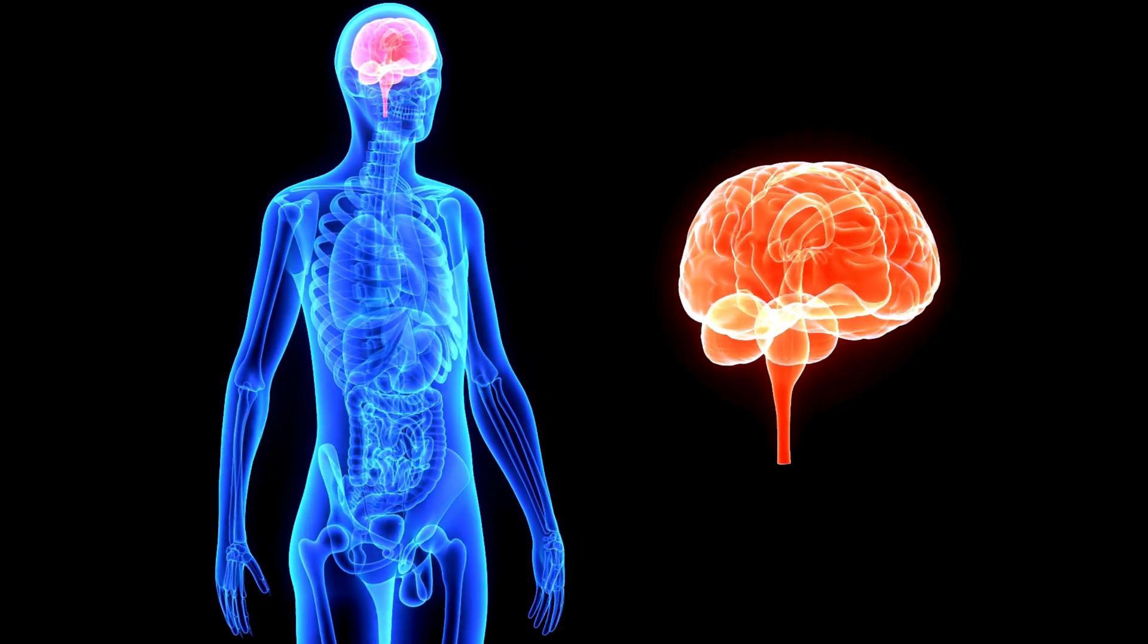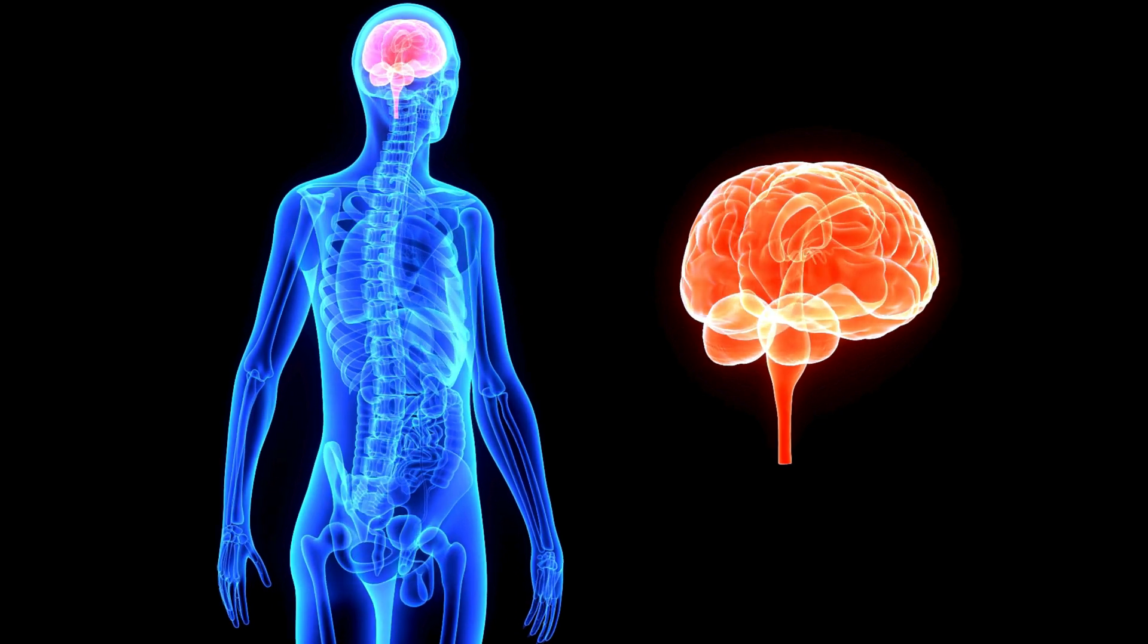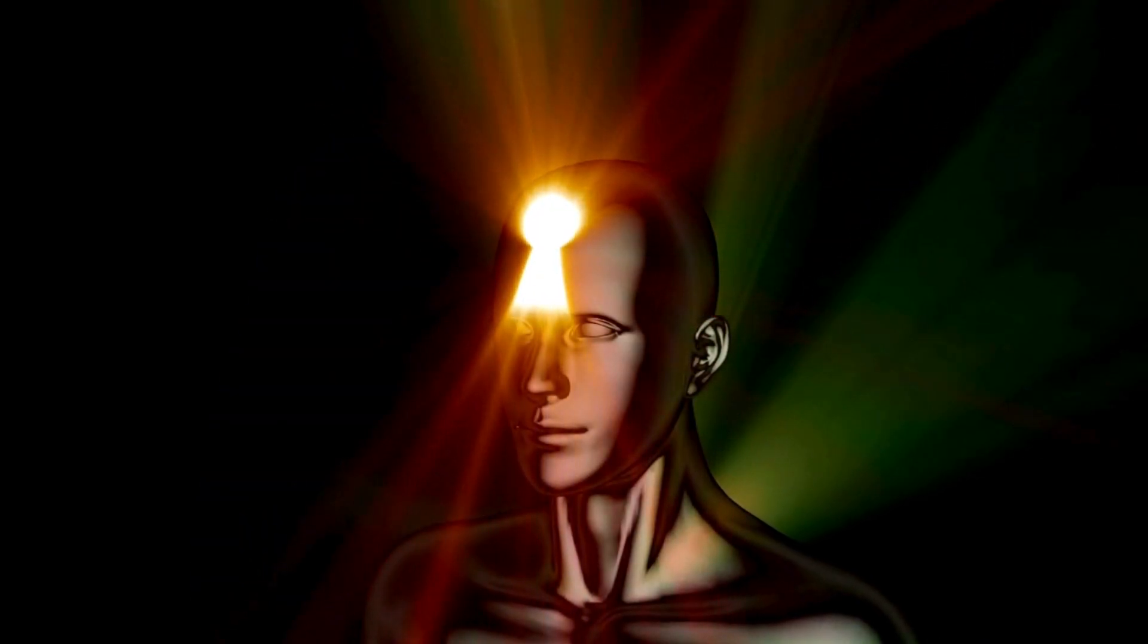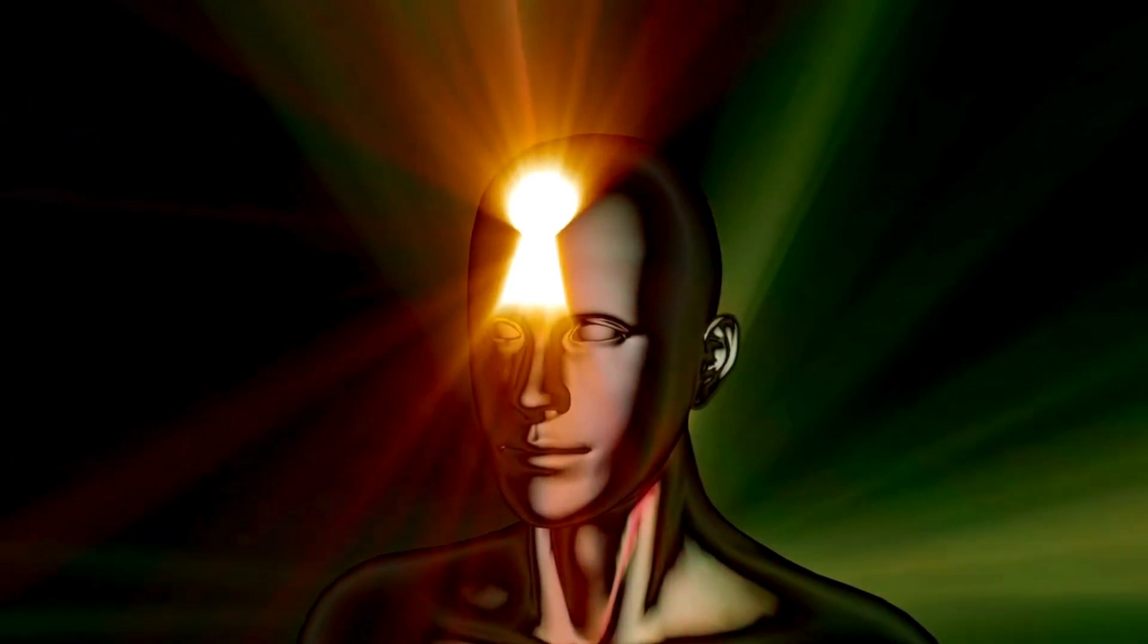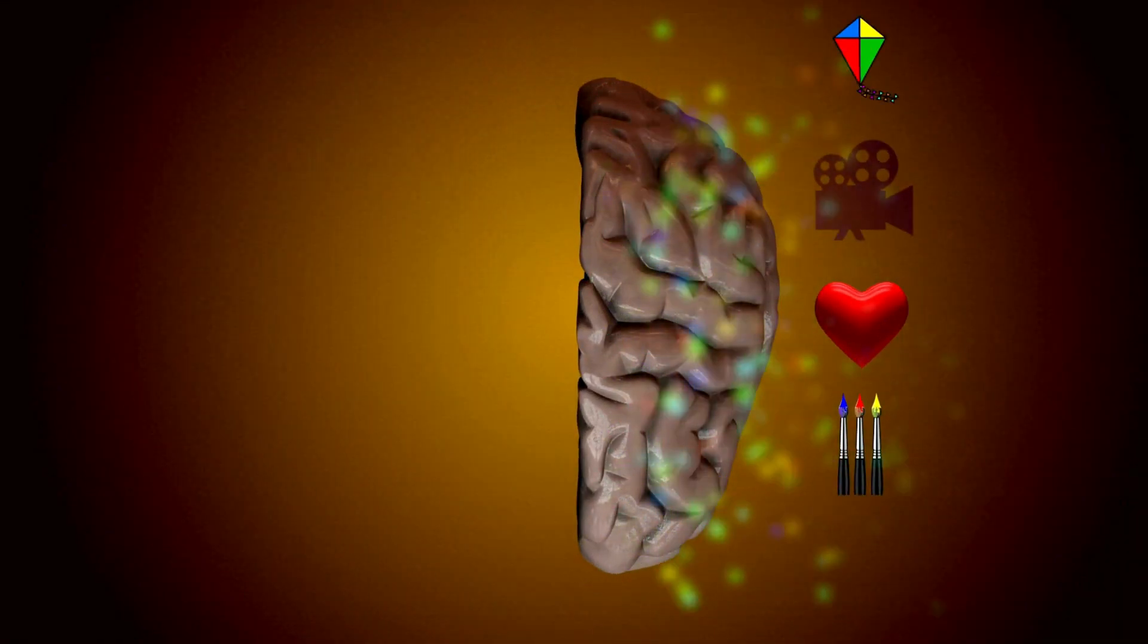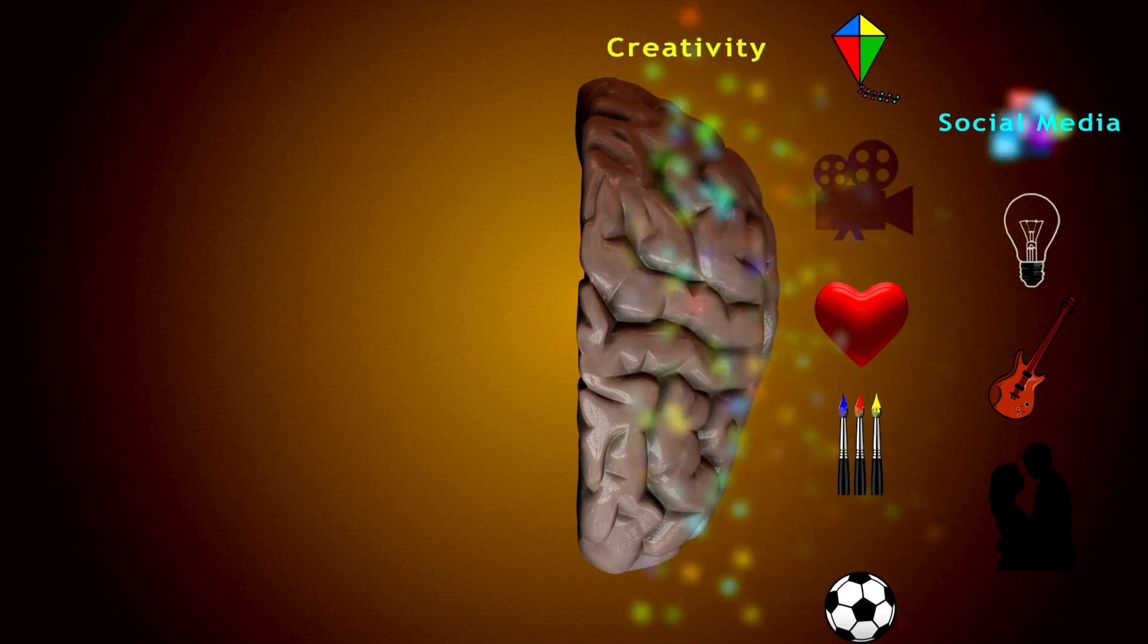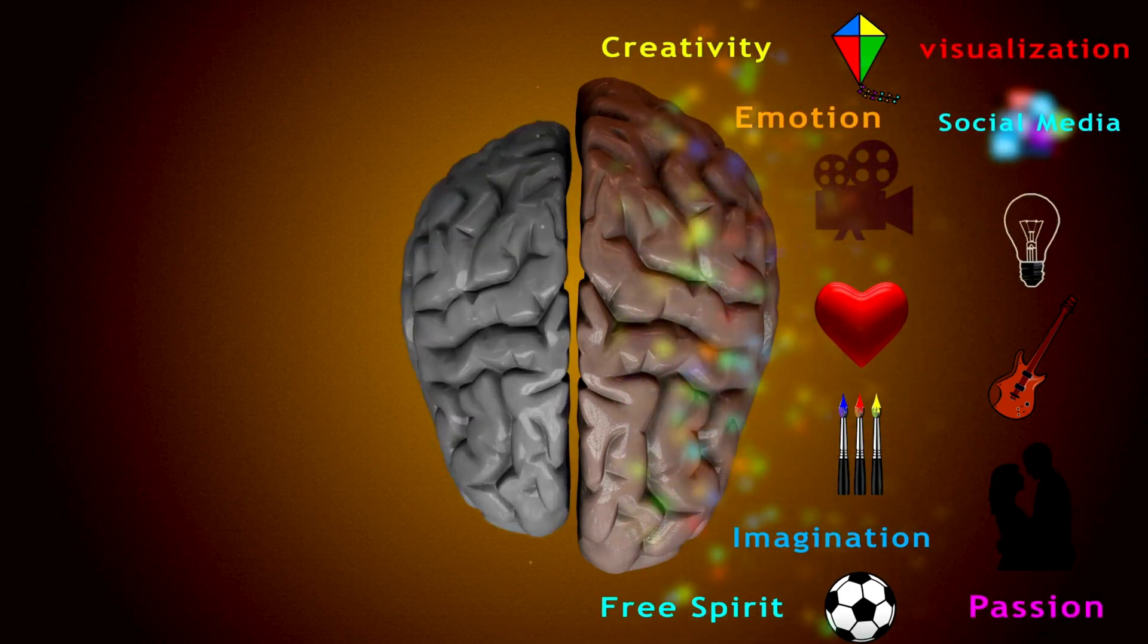The brain's limbic system, particularly the amygdala and hippocampus, plays a crucial role in processing emotions and forming memories associated with these emotions. When we encounter new information or experiences, the brain rapidly assesses them based on our existing beliefs and values.